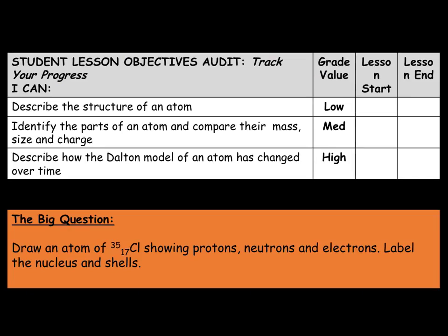In this video we will be looking over the structure of the atom, we will look at the parts of an atom and be able to compare their mass, their size and their charge, and finally we will look at the model of the atom, how this has changed and the work by John Dalton. Our big question for today is to be able to draw an atom of chlorine-35 showing the protons, neutrons and electrons, making sure we can also label the nucleus as well as the shells.